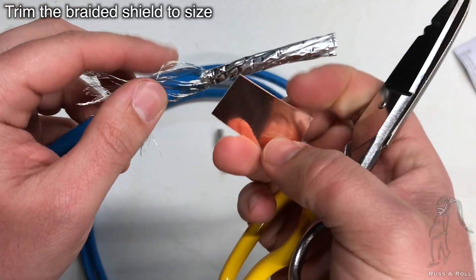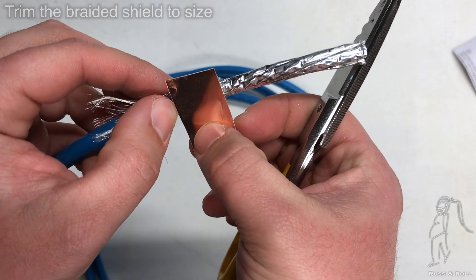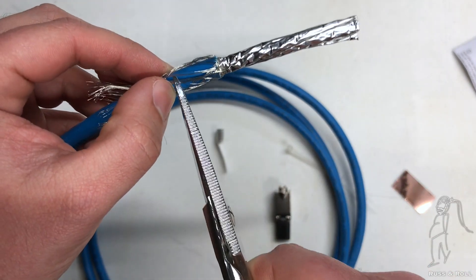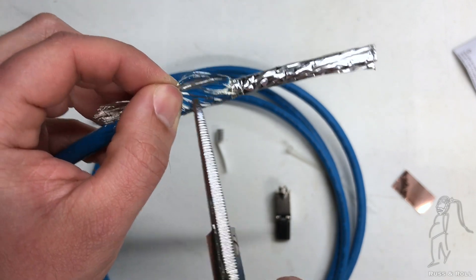And this is more shield than we need so we're going to take our snips and we're going to cut it down to size. What size? Well, it's got to fit under this foil adhesive bit, right? So we're going to use that to measure and we're going to cut it down so that it's a little bit shorter than that piece of foil.